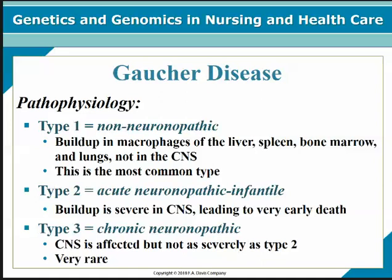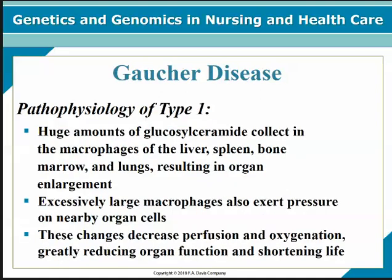Type 1 is what you most commonly would see. In type 1, you have huge amounts of glucosylceramide collecting in the macrophages of your liver, spleen, bone marrow, and lungs, resulting in enlarged organs. These large macrophages exert pressure on nearby cells in the organ, causing organ enlargement, and also decrease perfusion and oxygenation, therefore decreasing organ function and shortening life.